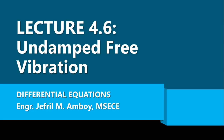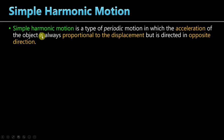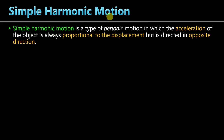Simple harmonic motion is a type of periodic motion in which the acceleration of the object is always proportional to the displacement. However, it is directed in the opposite direction. So from this description, it is said that the acceleration is always proportional to the displacement — that means when the displacement is large, the acceleration is also large. If there is no displacement, there is also no acceleration.